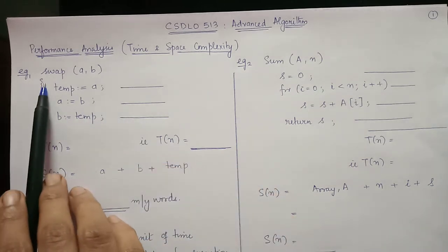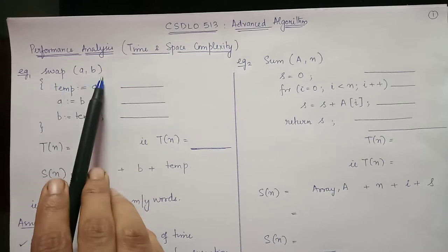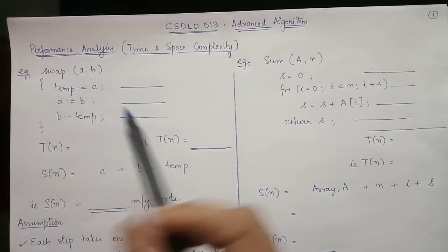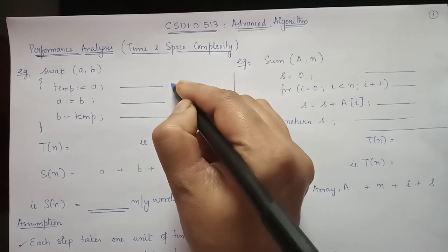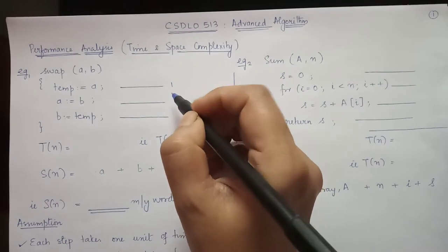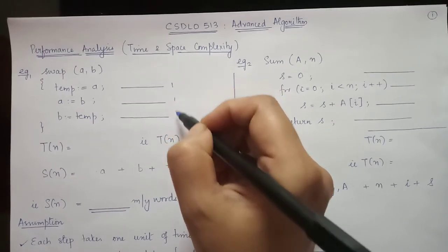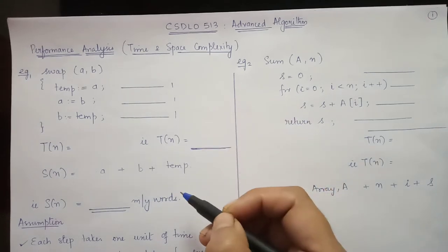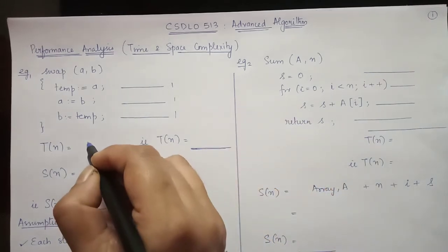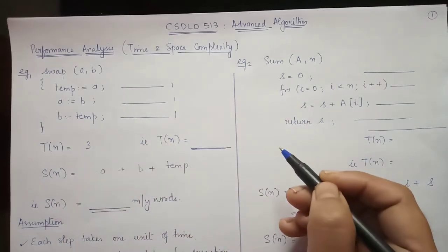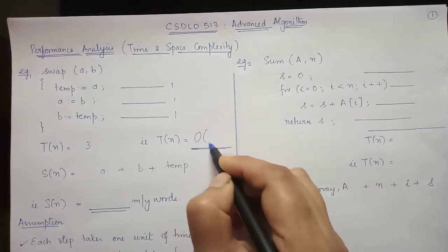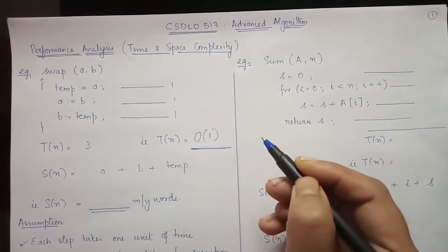Consider this sample code snippet for swapping two numbers. The time taken for executing each of these steps is one unit of time. So here, in effect, we require three units of time. That means T is order of one, it's a constant value.